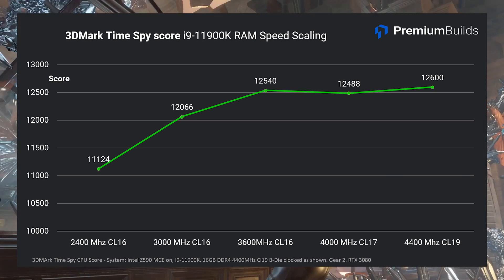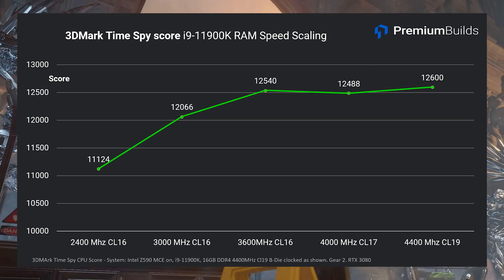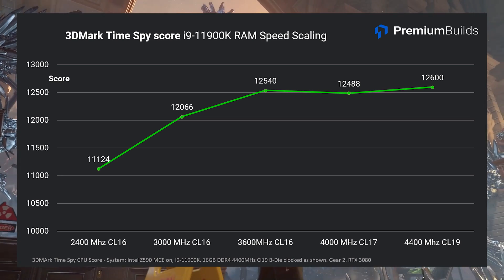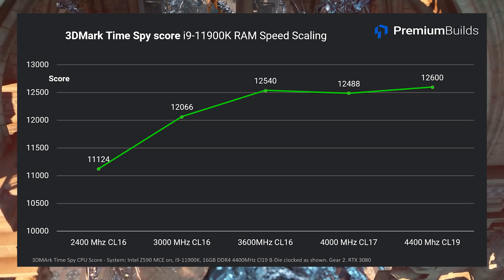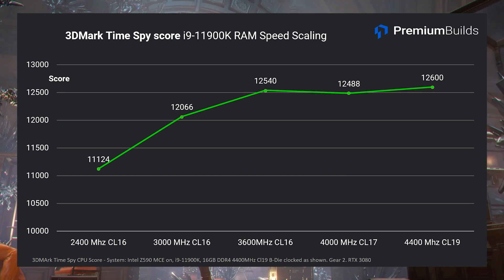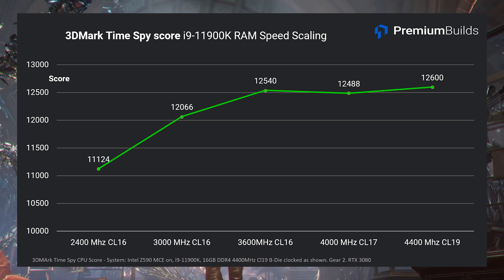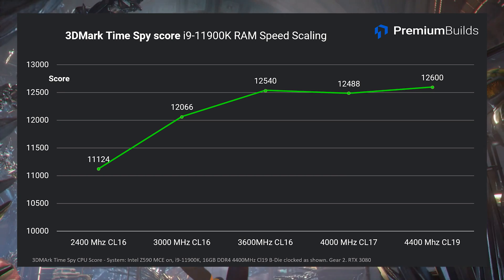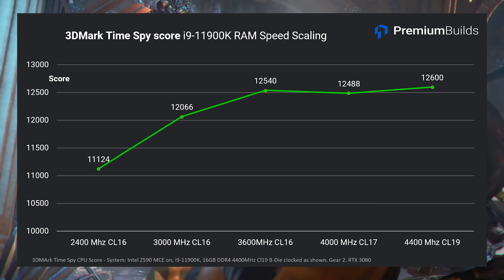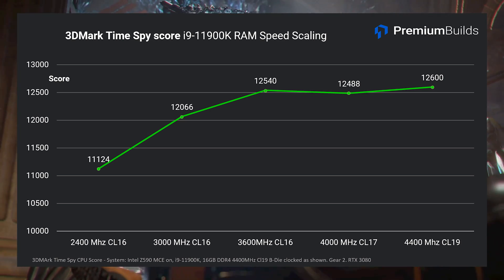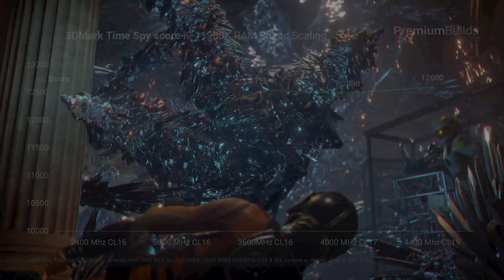It looks like we're really at the bitter end of the memory controller's performance at these higher speeds. It would take a significant investment of time in refining RAM timings manually to first stabilise the system and further improve performance. Nevertheless, 4400MHz CL19 does yield the highest score here - it's just that you can't play any games because they crash the system.